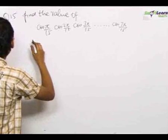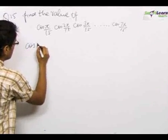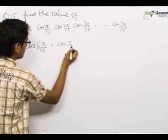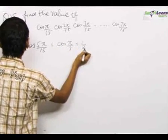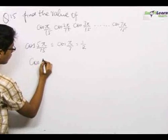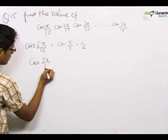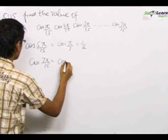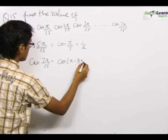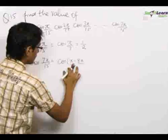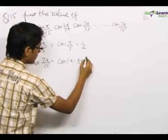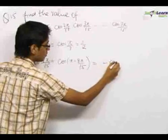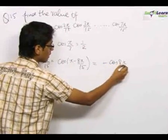First, we can convert cos(5π/15) as cos(π/3), which is equal to 1/2. Then cos(7π/15) we can write as cos(π − 8π/15), and we know that cos(π − θ) = −cos θ. So this becomes equal to −cos(8π/15).